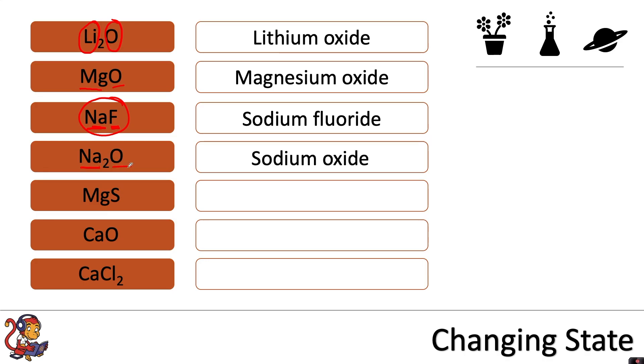Next we have sodium bonding with oxygen to make sodium oxide. In this example, magnesium is bonding with sulfur to make magnesium sulfide.